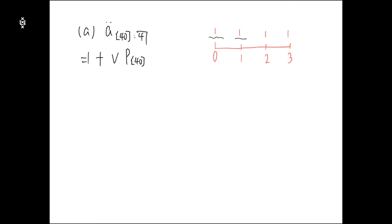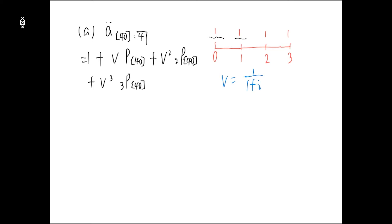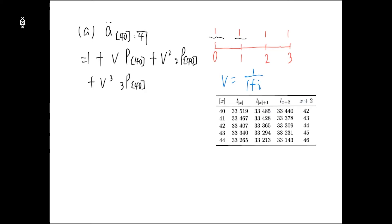Similarly, for the third payment, we discount back, and this person has to survive for two years. And this continues for the last payment. v is simply 1 over 1 plus i. Now based on the table, we are going to calculate those probabilities.